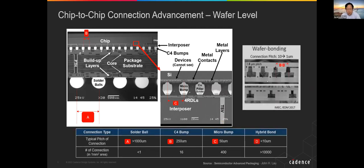Imagine multiple chips stacking up together. Between them, the industry is currently using hybrid bonding, and the size of a hybrid bond is on the order of a tenth of a micron — between one and two tenths right now. As the size becomes smaller and smaller, how to optimize the bump assignment becomes critical to ensure the 3D IC assembly works as designed.